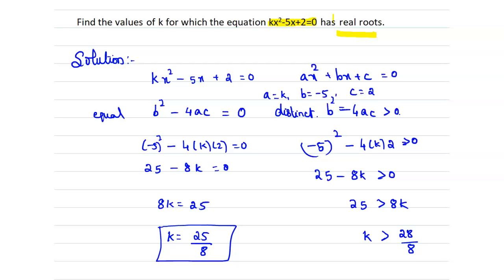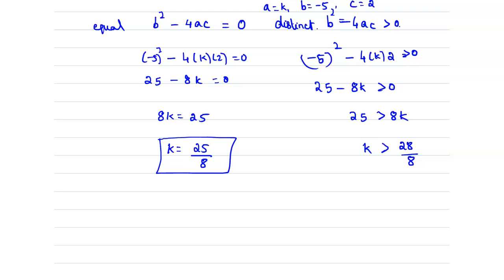So from this we can say that at last we can conclude the equation kx² - 5x + 2 = 0 contains real roots when k ≥ 25/8. So if k takes the value more than this then the equation will contain two real roots which may be equal roots or distinct roots.